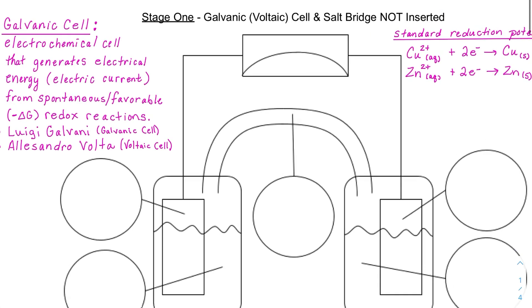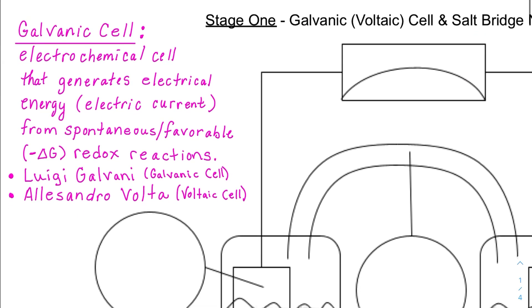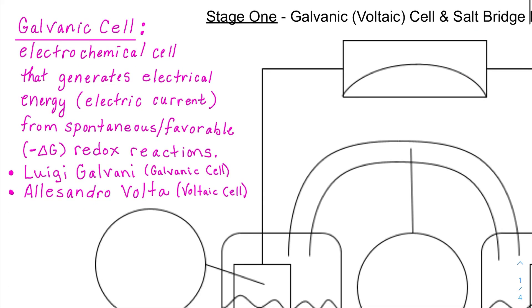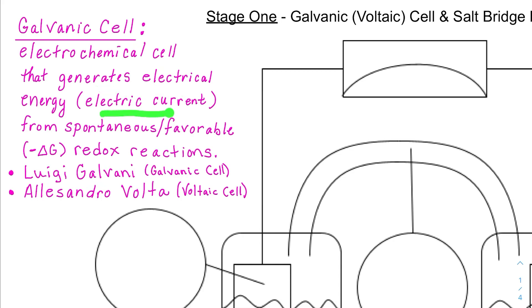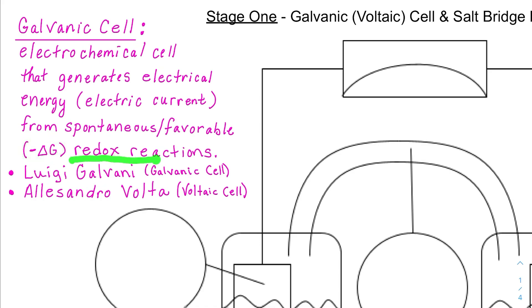Let's get started with what is a galvanic cell. It's an electrochemical cell that generates electrical energy, or electric current, from a spontaneous — meaning favorable, where delta G is negative — redox reaction.